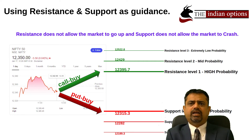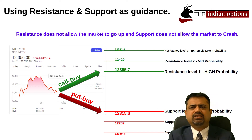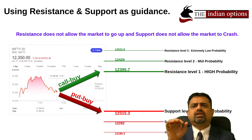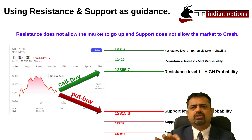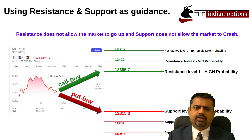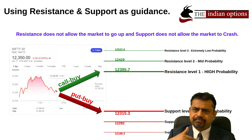These figures are actually released by NSE India every day, or you can just search on Google — something like 'support resistance level Nifty today' — and you will get those figures: three figures on the upside resistance side and three figures on the downside support side.